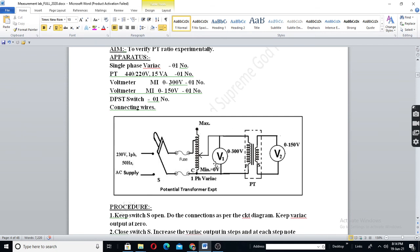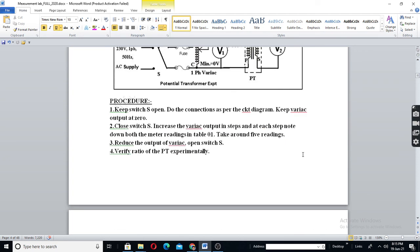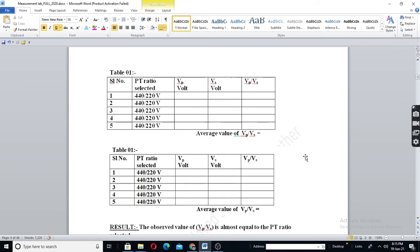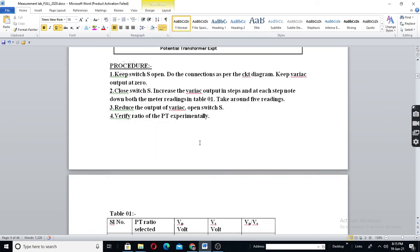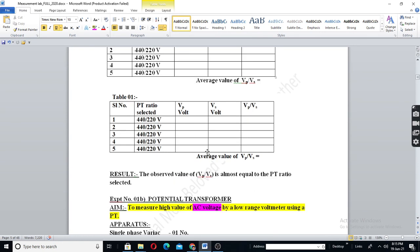In a transformer, have a voltmeter at primary and secondary. Go on increasing the voltage with variac. Read both the readings. And then V2 by V1, you will get voltage ratio or V1 by V2. That is not in your syllabus. But you should know that. So, this is regarding experiment number 1.